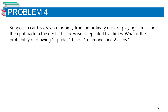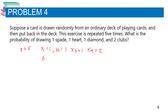Problem number four: Suppose a card is drawn randomly from an ordinary deck of playing cards and then put back in the deck. The exercise is repeated 5 times. What is the probability of drawing 1 spade, 1 heart, 1 diamond, and 2 clubs? Here n equals 5, x₁ equals 1, x₂ equals 1, x₃ equals 1, and x₄ equals 2. Since there are 4 suits, the probability of each suit is 0.25.